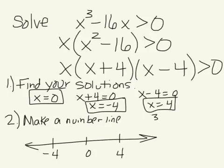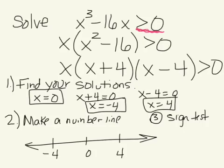Our third step is to perform the sign test. With the sign test, we take a value in each of the regions created on the number line and plug it into our expression to see if it produces a value greater than zero — we're looking for positive results. On the leftmost region, I'm going to test the value x = -5.